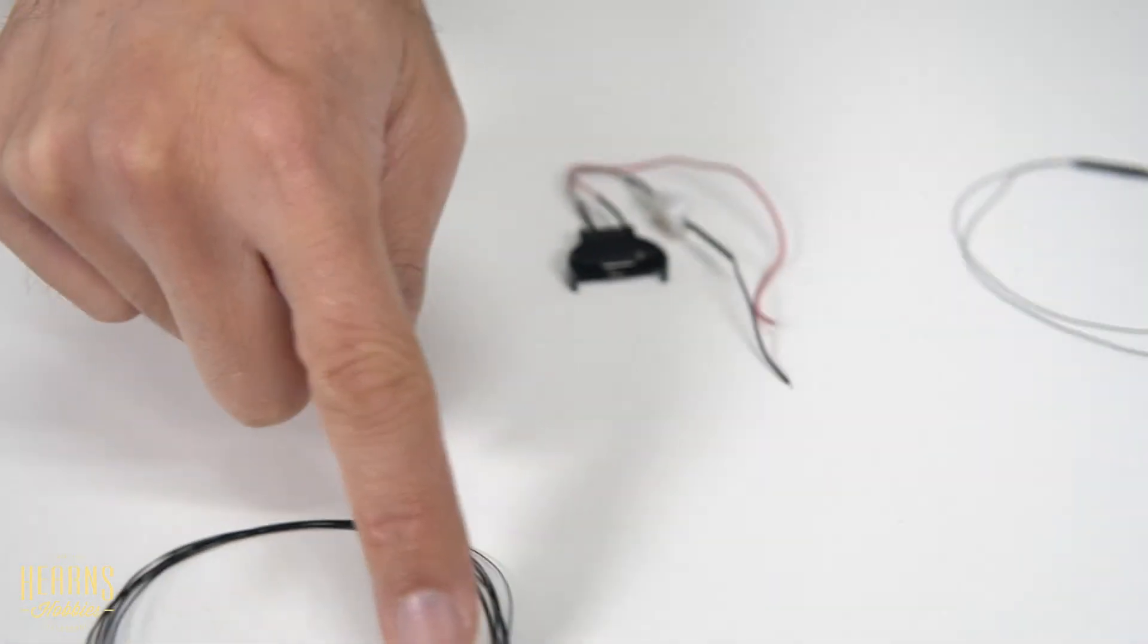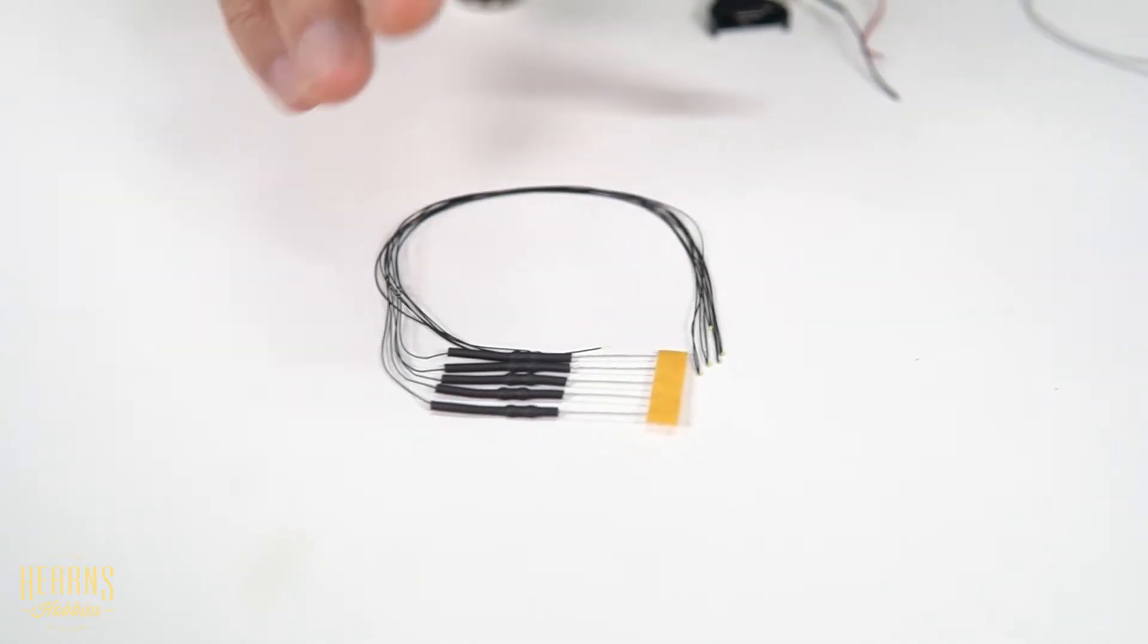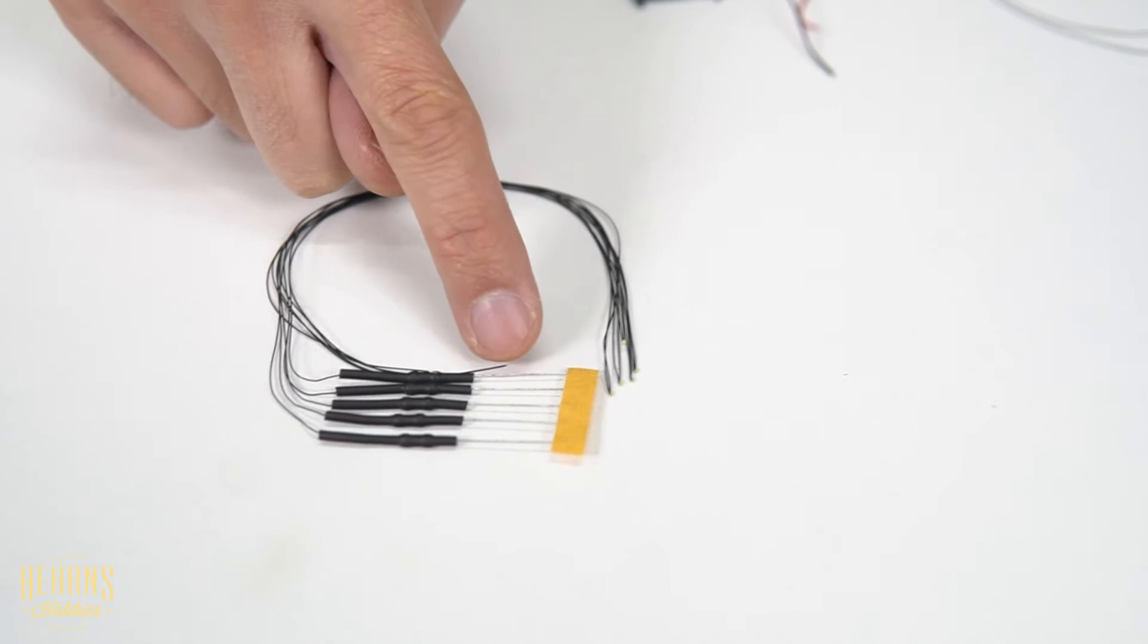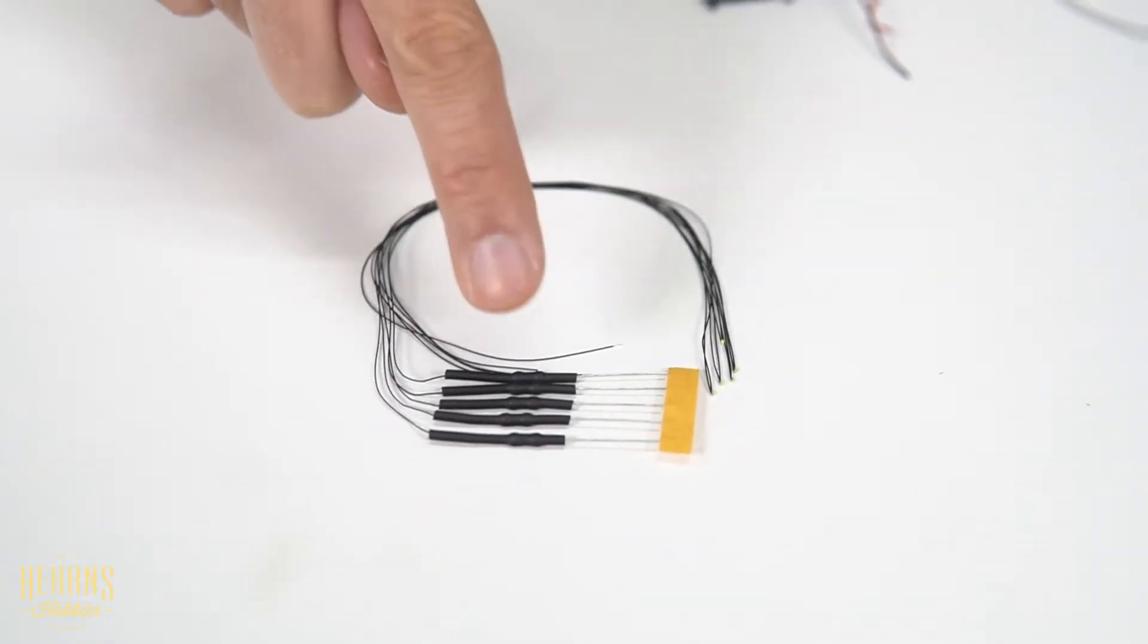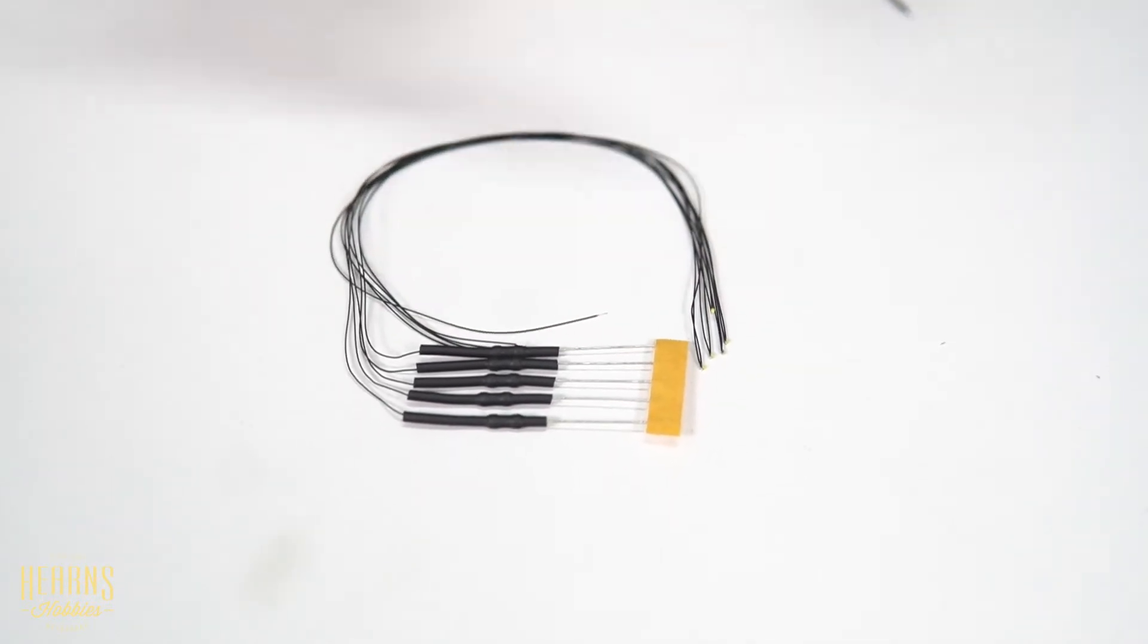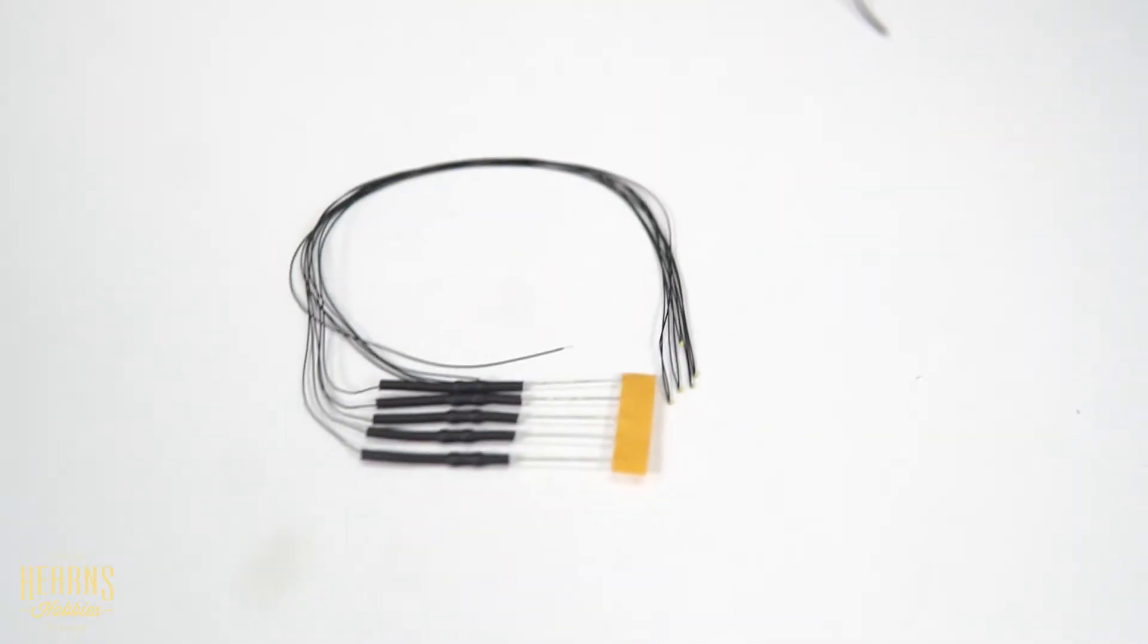What you'll find is I think you get 10 in a packet. There's various colors, and then you'll have one loose lead, which is this one, and then there's one which is being connected onto a load resistor. That's pretty important so that the LEDs don't burn out too quickly.